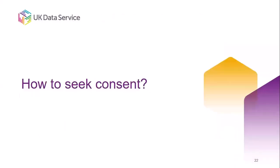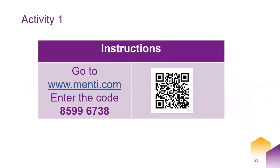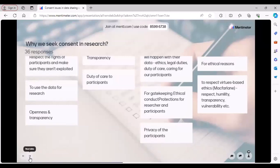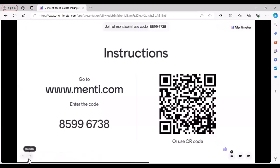The next section is about how to seek consent, covering formats, documentation, methods, and record keeping. Before that, you can join the Mentimeter — it gives you a break from listening to me continuously, as it is intense and a lot of content to take in. This is the code or QR code to join.